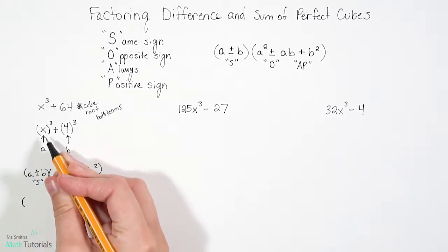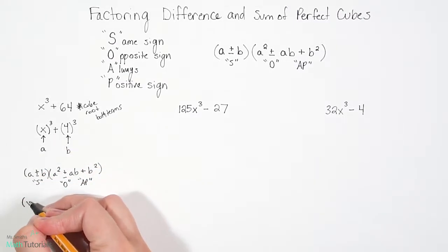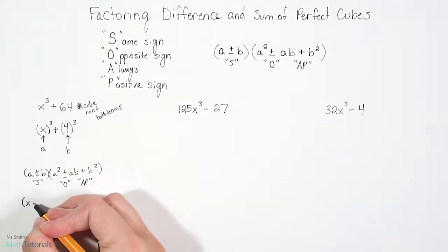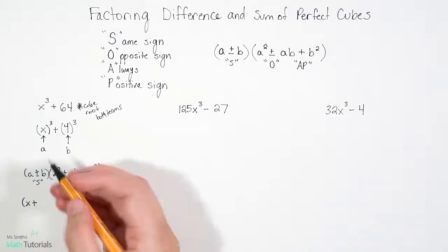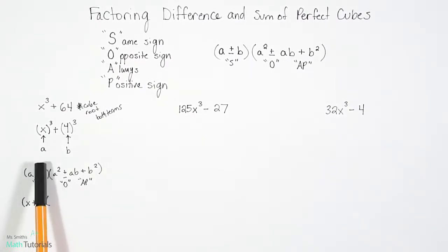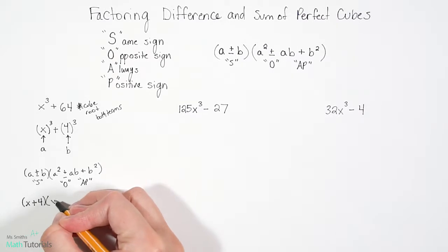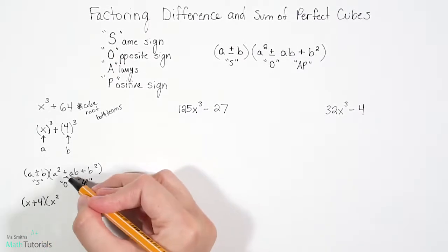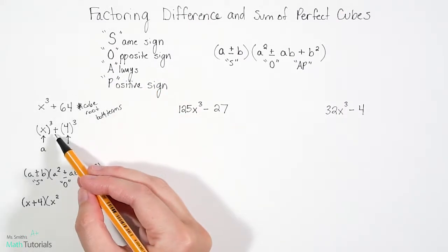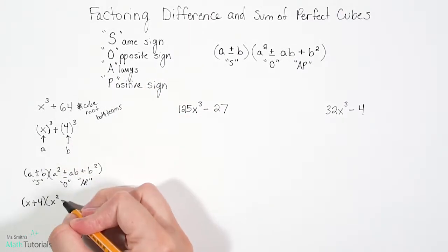But instead of a, we're going to put what a is, x. Now remember our s here for our sign stands for the same sign. So what was our sign here? It was positive. So we're going to keep it positive. Next will be our b value, which we said was four. We'll close that parentheses and we'll start a new one. Our next one says a². Remember a is x, so we'll write x². Now for this sign, it says o. Remember o is opposite sign. So originally we had positive. Now we're going to have negative.